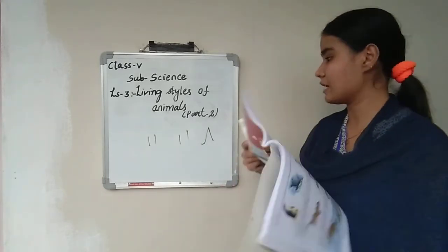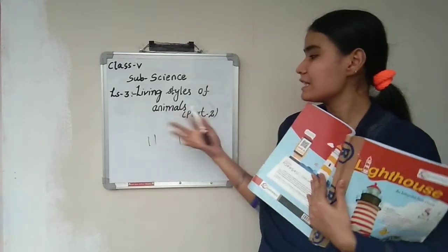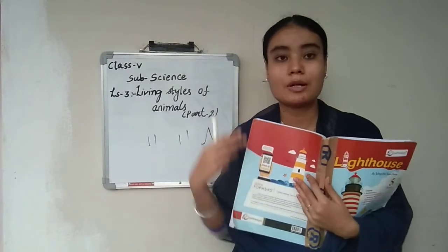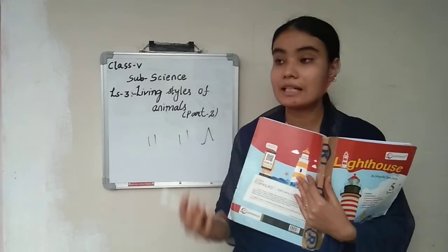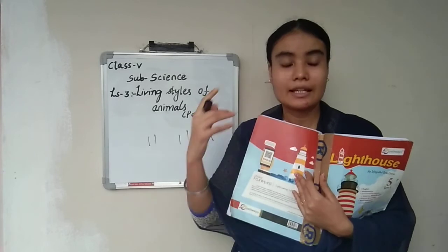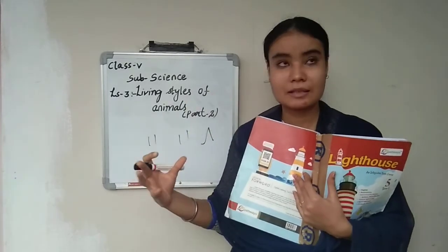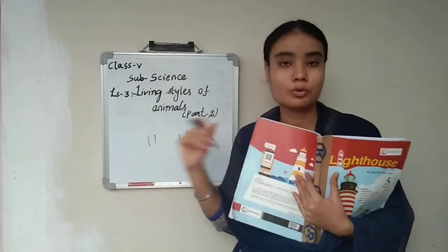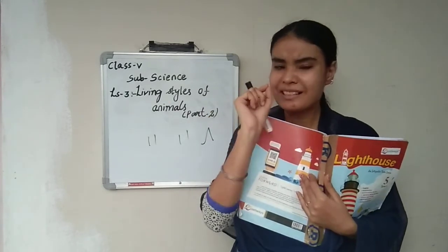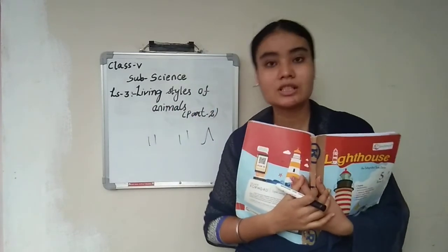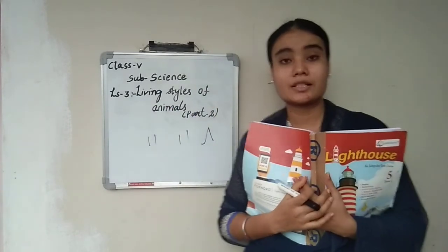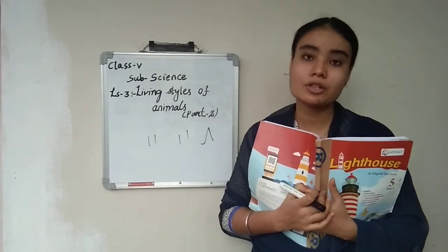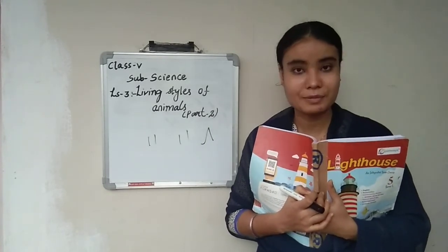With this we have completed Part Two of Lesson Number Three — Living Styles of Animals. In this lesson we discussed the breathing process as well as the locomotory process — how animals move from one place to another and what they use to move, right from insects to large animals. I hope this lesson is very clear to you all. We'll meet soon with a new video. Till then, children, goodbye and take care.